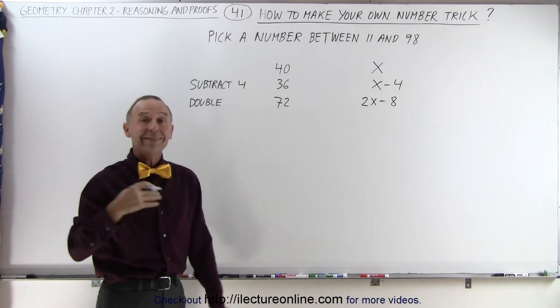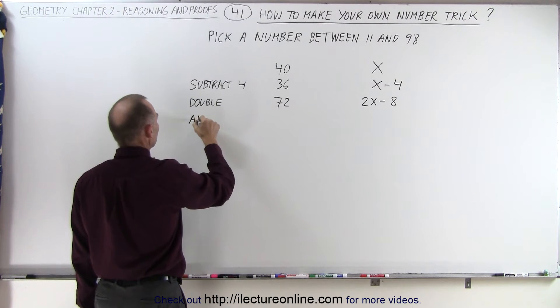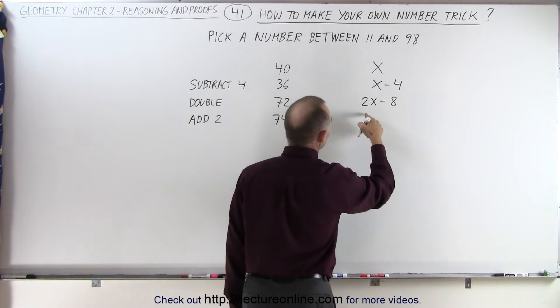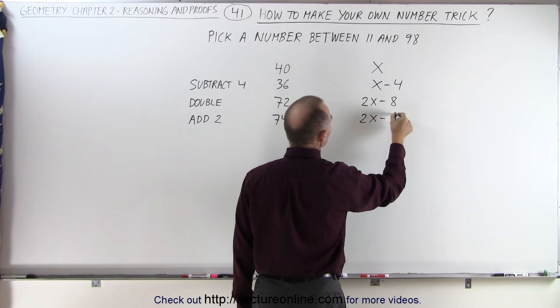Now let's add 2 to the number. So add 2, that gives us 74, and add 2 to this, that gives us 2x minus 6.